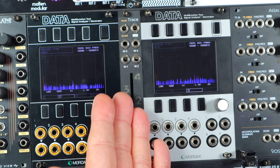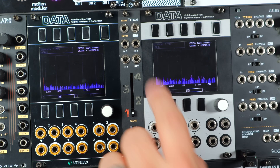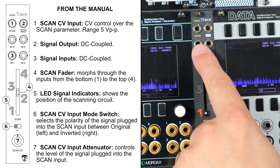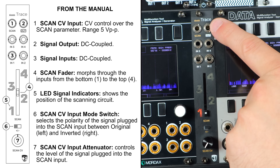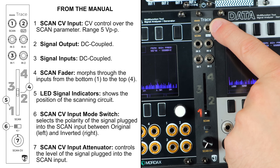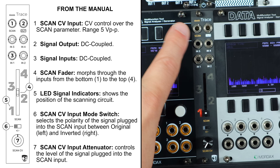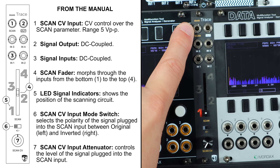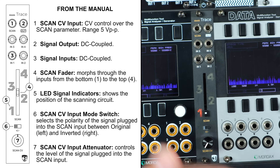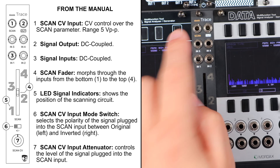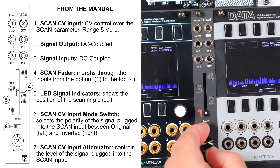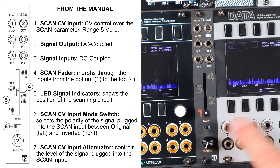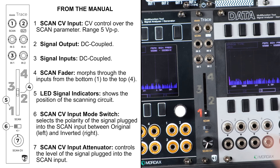Going through the features, it's really nice and simple. We have our four inputs that we scan through, coming to a single output. Then we have the scan CV input that can take any modulation sources or even things right up through audio rates. The scan CV input has a scan CV attenuator, and there's a switch to invert that CV behavior as well.